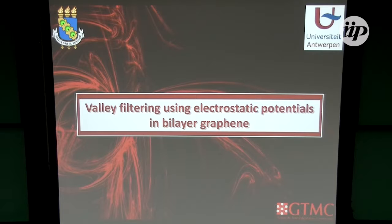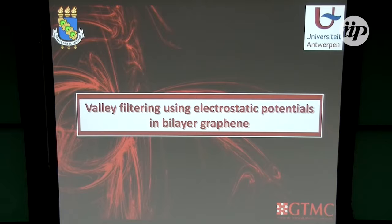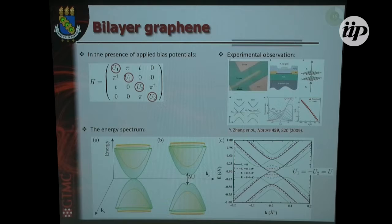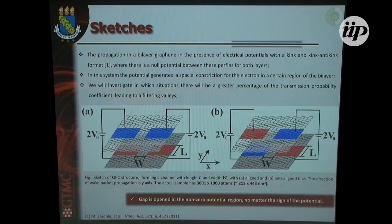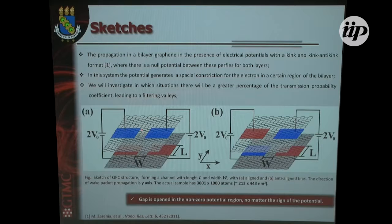So let's start with the first proposal, which just includes a layer-staggered potential as I showed you. It can be easily performed as shown in this slide — you have bottom and top gates. I expect that it can be done in the near future because it's simple. I will show the two configurations as I told you. In both of them, we obtain steps in the transmission probability as a function of the energy of the initial Gaussian wave packet.